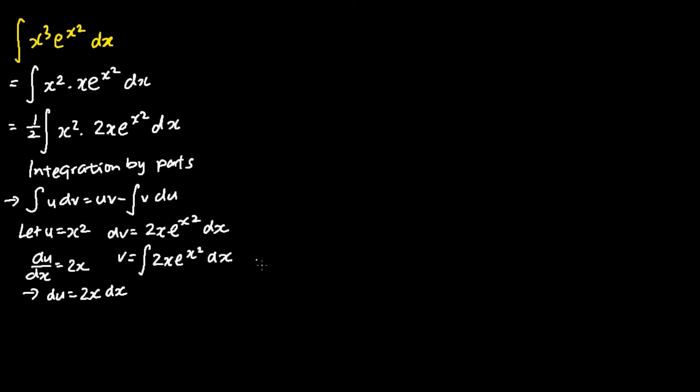To find v, we will integrate 2x e to the power of x squared dx. For this particular part, we are going to apply an integration technique.